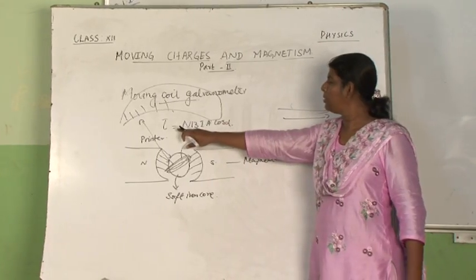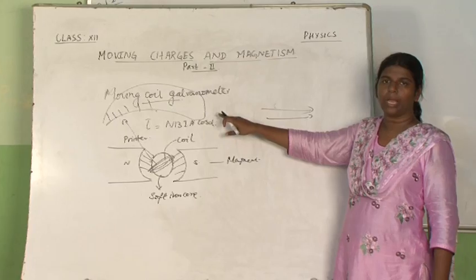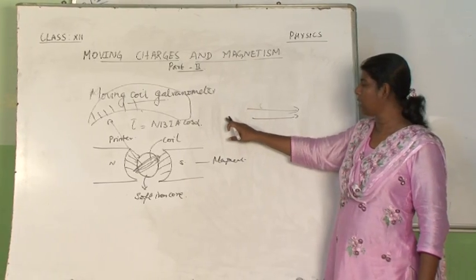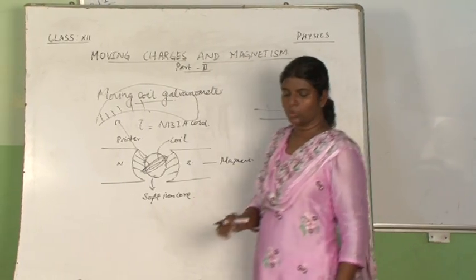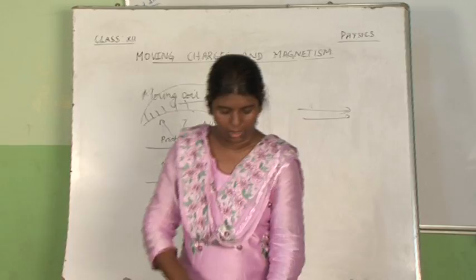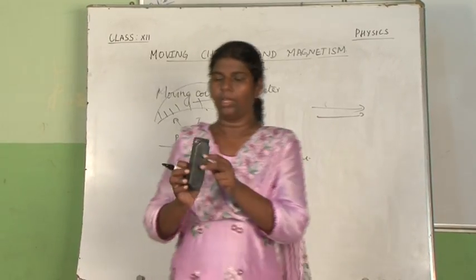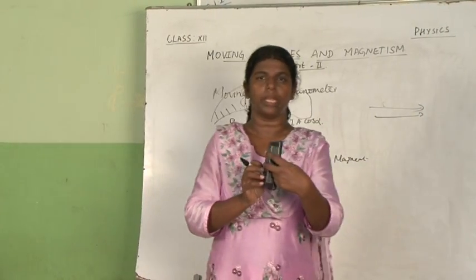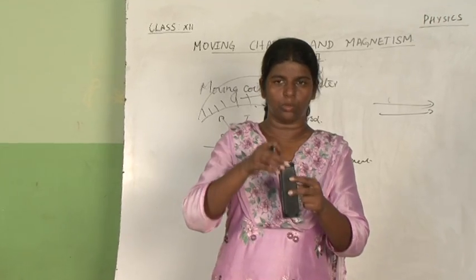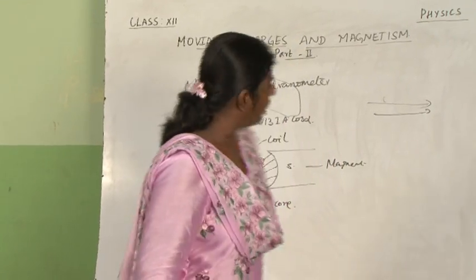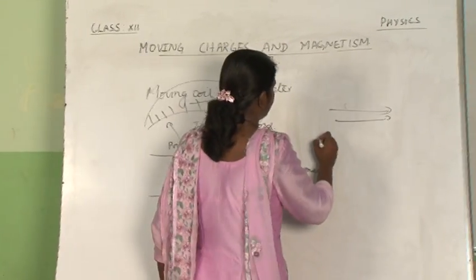In the principle, we saw torque is equal to N into BiA cos alpha. When there is a twist in the coil, imagine this as a coil — if it is twisted up to some extent, after that it will come back to the original position. The deflecting torque is equal to restoring torque.